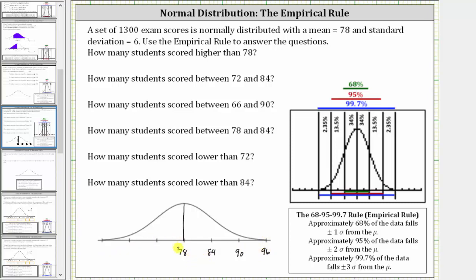And to the left of the mean: 78 minus 6 is 72, which is one standard deviation below the mean; 72 minus 6 is 66, two standard deviations below the mean; and 66 minus 6 is 60, three standard deviations below the mean.